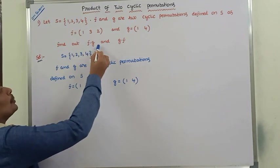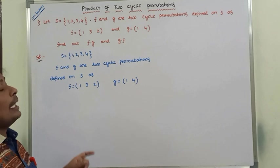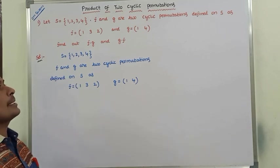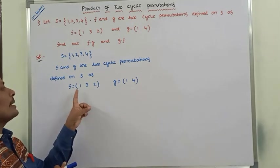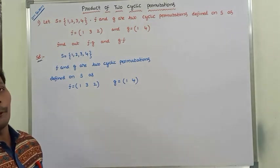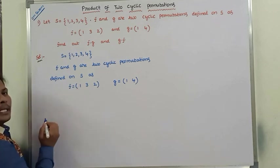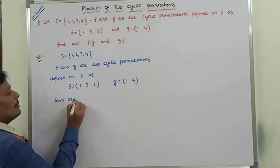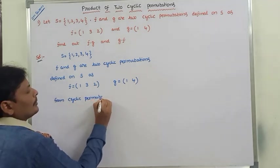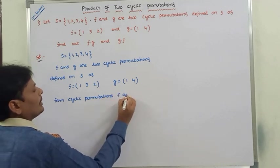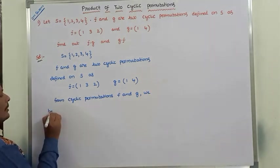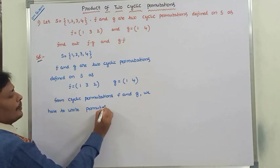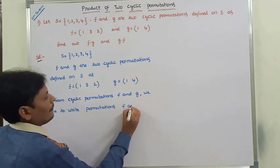So, product of two cyclic permutations. The given data is: let S = {1, 2, 3, 4}. F and G are two cyclic permutations defined on set S as F = (1, 3, 2) and G = (1, 4). From these cyclic permutations F and G, we have to write the standard two-row permutations F and G.